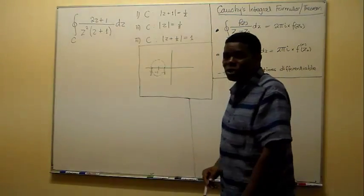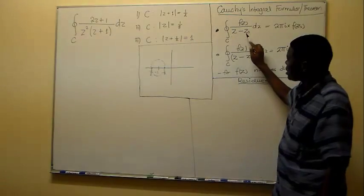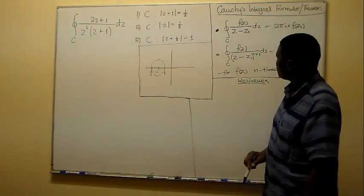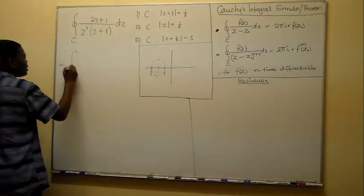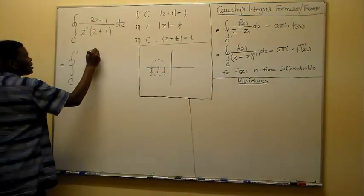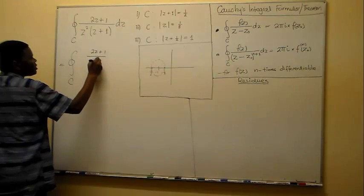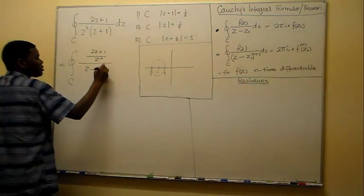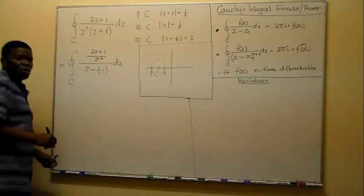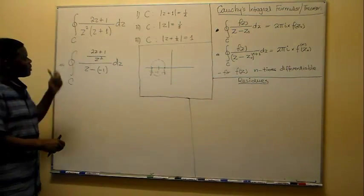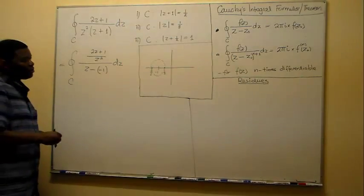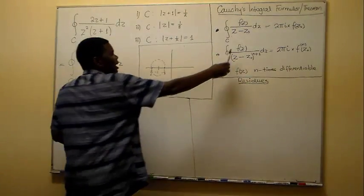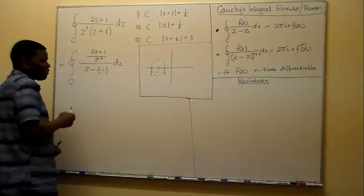So then we need to look at our Cauchy integral formula and isolate the pole at minus 1. We rewrite the integral as the integral of (2z + 1) over z-squared, all over (z + 1) dz, manipulating this expression to get it into the Cauchy form, where we can identify that z₀ = minus 1.